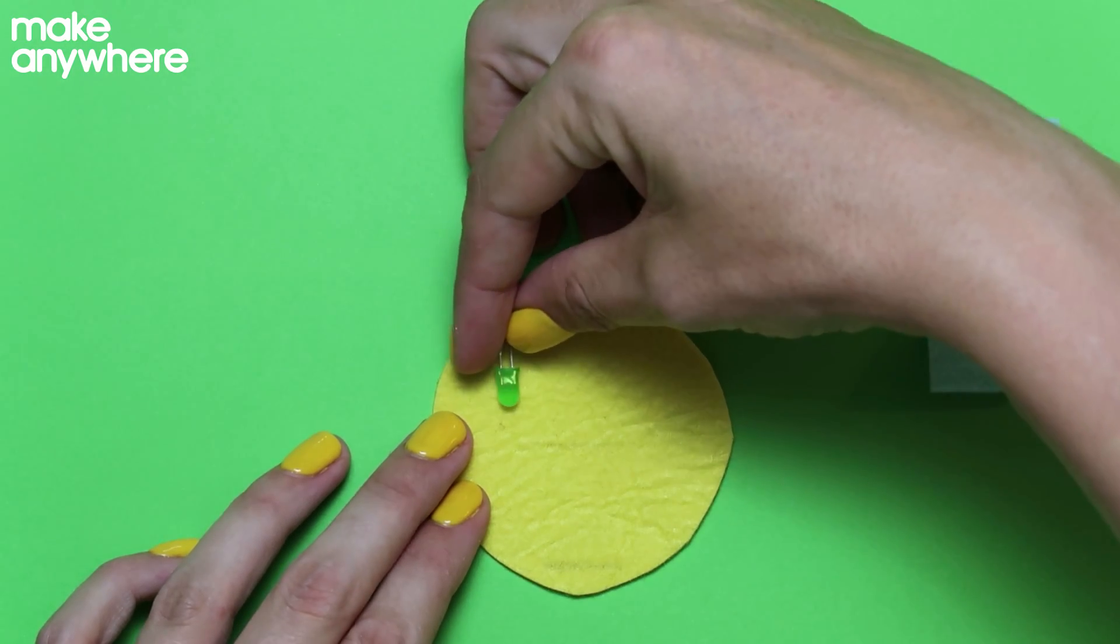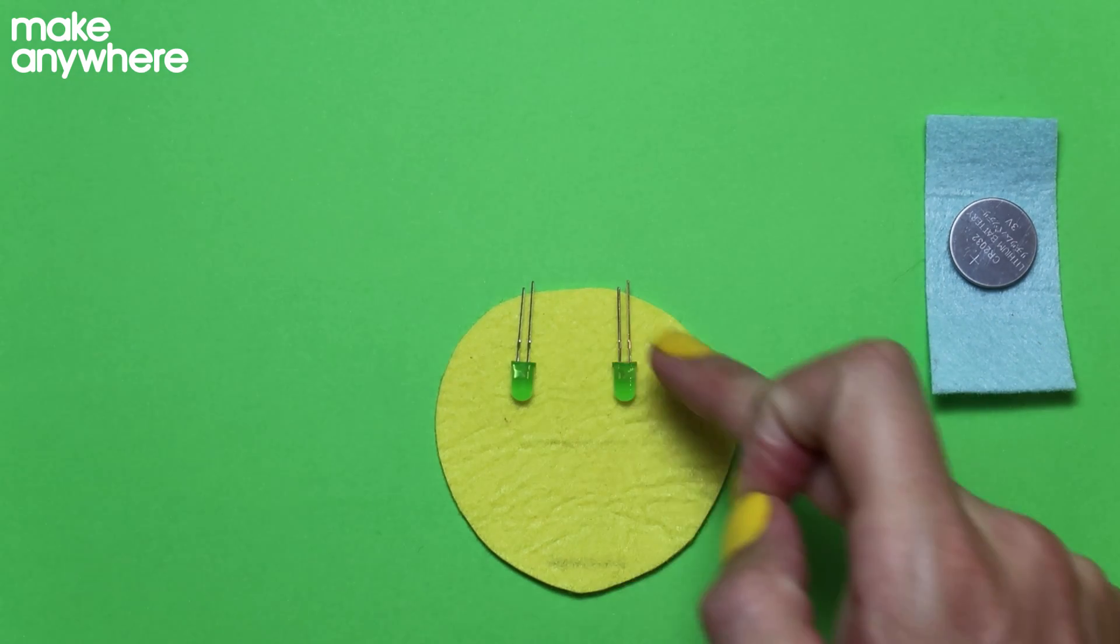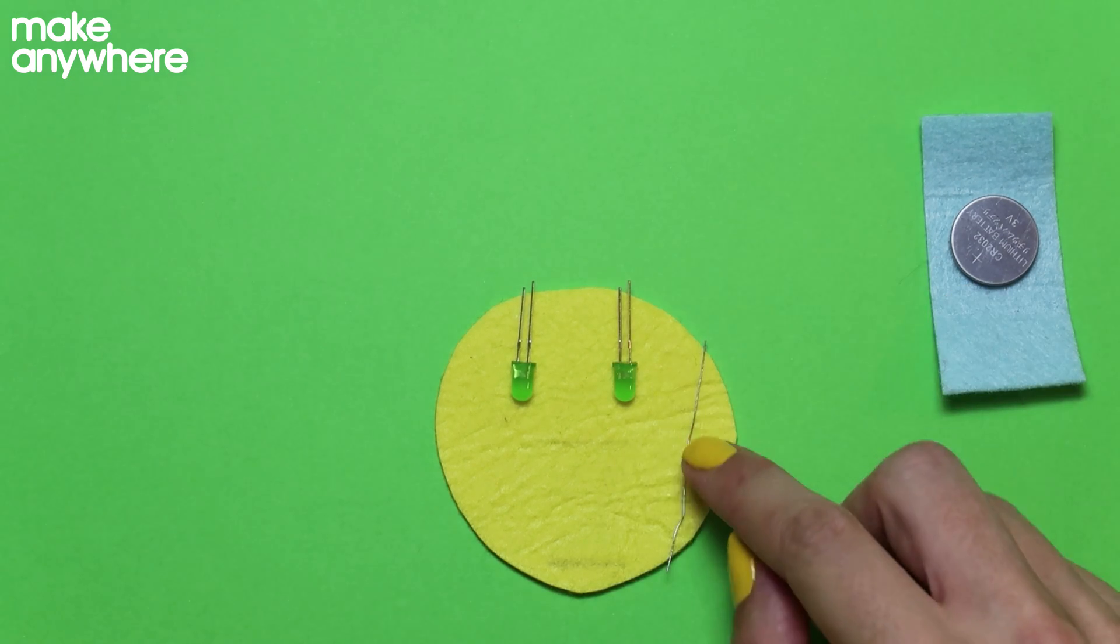So if our battery holder sits there, we want our two LEDs, one there and one there. Our resistor will need to join our batteries on the way to the battery holder. So we're going to put our resistor there.